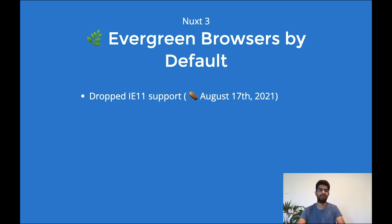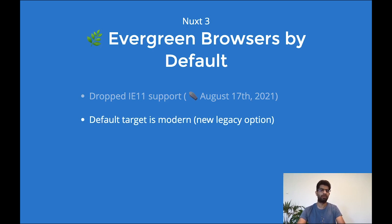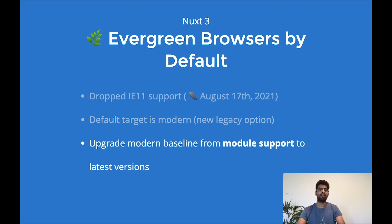The default target is now modern. We will still have a legacy option so if you need to support older browsers for any reason, you can turn this option on. The most important part is that we are upgrading the baseline of modern browsers. In past versions of Nuxt we considered a browser supporting ES modules as a modern browser, but over time those browsers are becoming legacy since we still need some level of transpilation for the modern bundle. We are upgrading the baseline from module support to the latest versions of browsers with reasonable user coverage. This means less transpilation, and less transpilation means much faster build times.